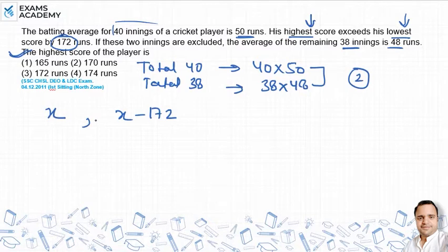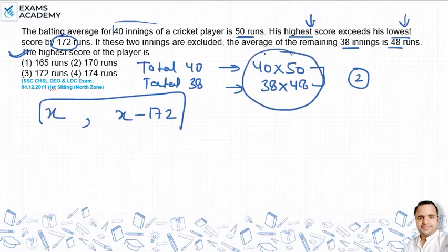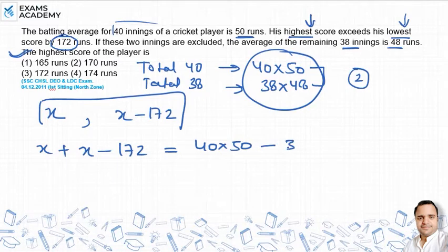So the sum between the two, x plus x minus 172, this will equal 40 into 50 minus 38 into 48. We will solve it.